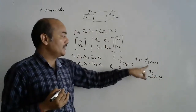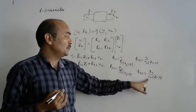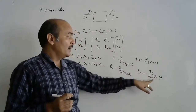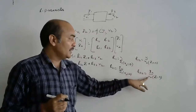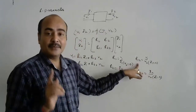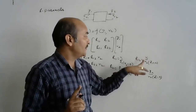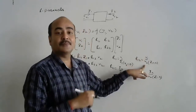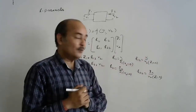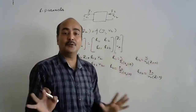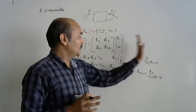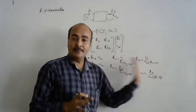H22 is output current to output voltage with input port open circuit, so it is the output admittance with input port open circuit. H12 represents the reverse transfer voltage ratio — it is the ratio of input voltage to output voltage with input port open circuit. These are all four H parameters.